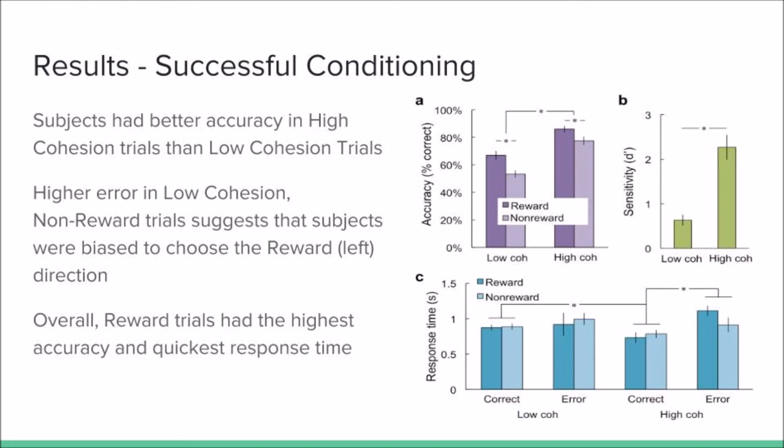There are several different results to consider for this experiment. The first, as expected, is the participant showing a higher accuracy for higher cohesion trials than for the low cohesion trials.